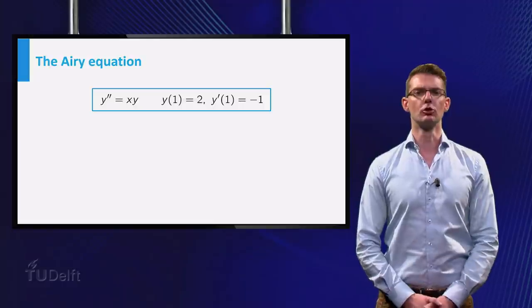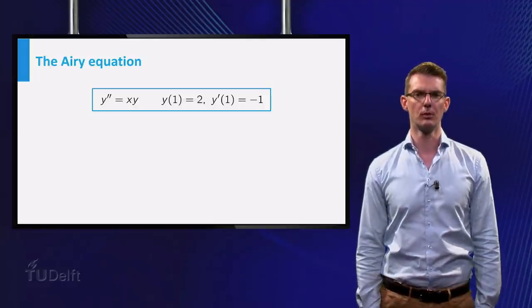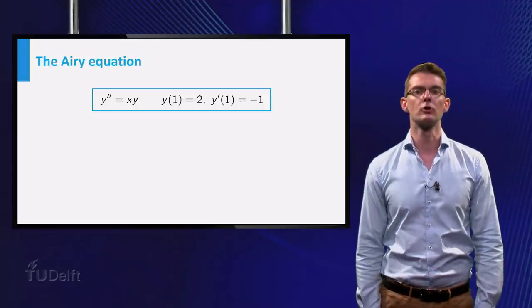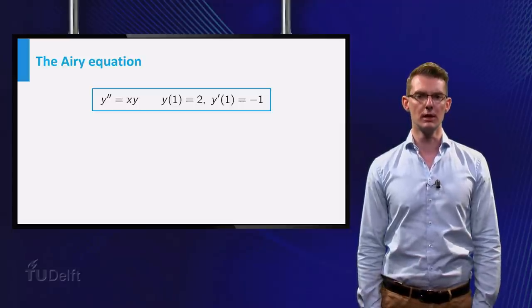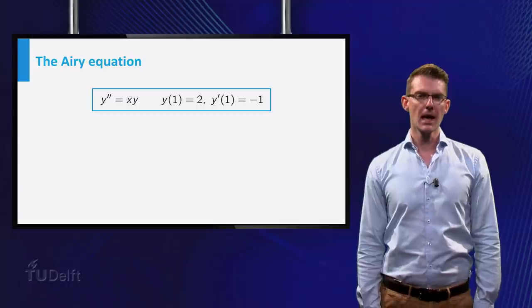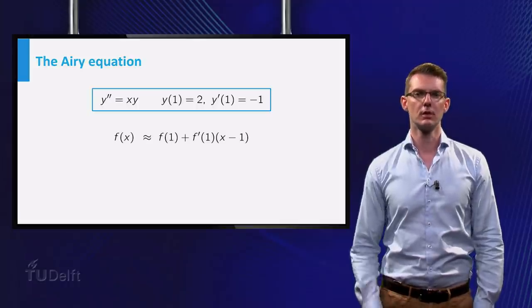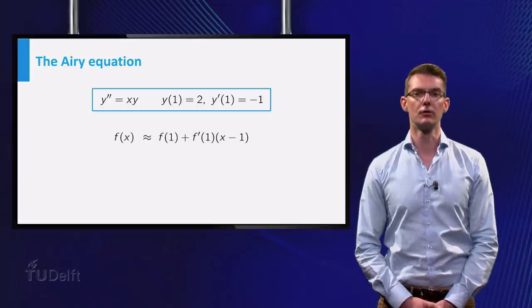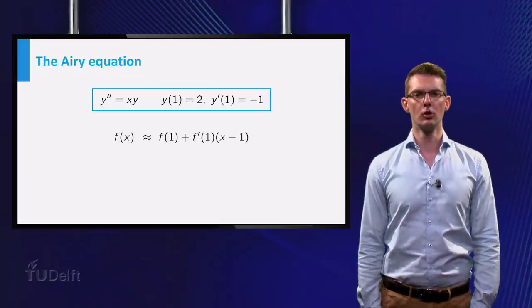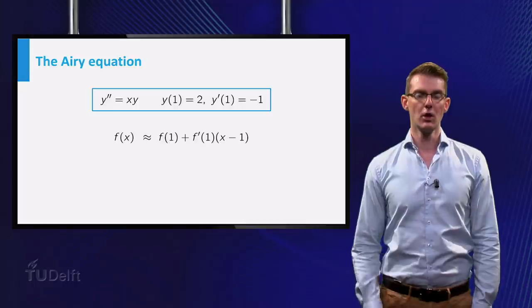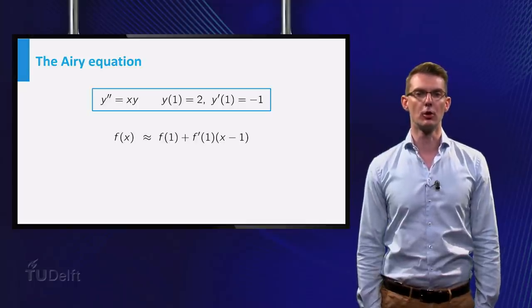Let's say f of x is the solution of this initial value problem. We are going to construct an approximation of the function f of x using a Taylor polynomial of degree 1. Since the initial values give us some information about the behavior of the solution in the point x is 1, we will look for a Taylor polynomial centered at 1. You can see the general form of such a polynomial on the screen.